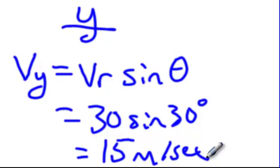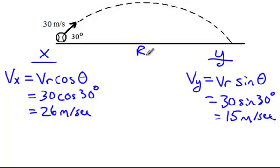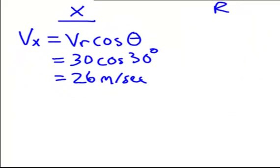Now we have all the information we need in order to find the range, the height, as well as the time. If we take a look at the x direction, we only have one equation we can use in the x, which is Vx equals dx over t. We know the velocity in the x is 26 meters per second, but we don't know the displacement in the x, which we call the range, or the time. So let's go over to the y.